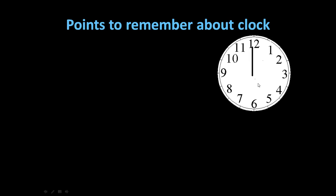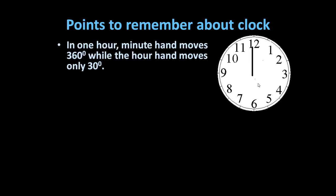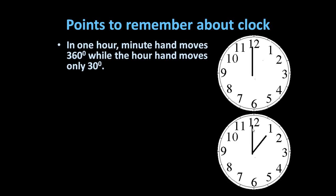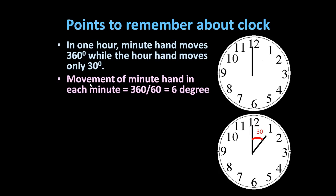Here in this clock you can see it is exactly 12 o'clock. After one hour, the minute hand will move 360 degrees — it starts here and in one hour it will move back up to this point making an angle of 360 degrees. The hour hand, however, will only move up to 30 degrees. So in one hour the minute hand moves 360 degrees, meaning the movement of the minute hand each minute is 360 divided by 60, equal to 6 degrees.